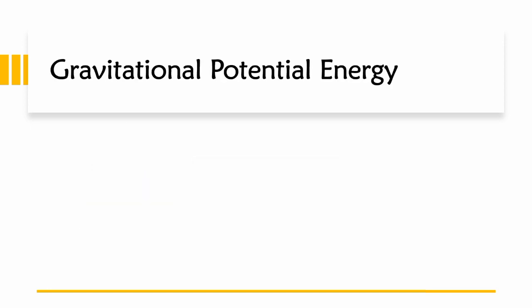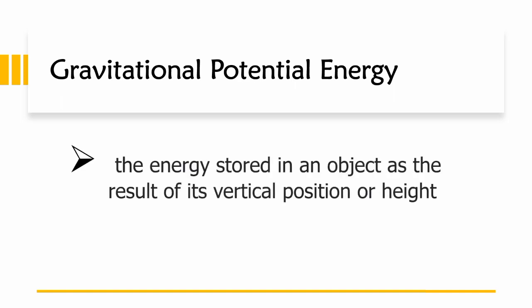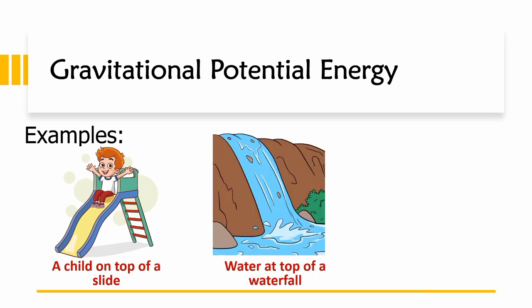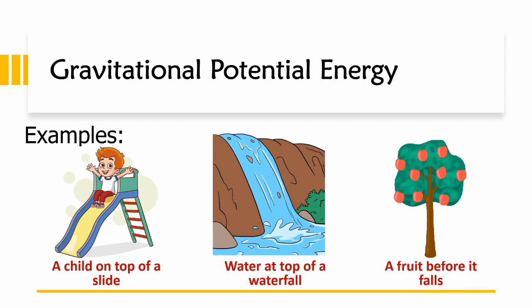Another type of potential energy is gravitational potential energy, which is the stored energy in an object as the result of its vertical position or height. Examples: a child on top of a slide, water atop of a waterfall, or a fruit on the tree before it falls.